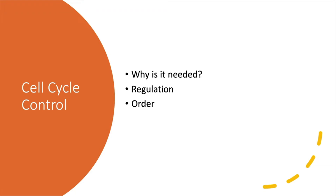In order for cells to grow and for repair to occur, proper DNA is needed. You need to regulate that DNA. Cells have to grow at a specific rate, and growth needs to happen at specific times. This is where regulation comes into play.